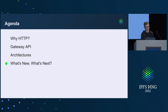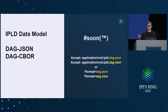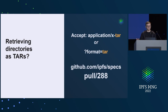That was me speed-running. What's new and what's next: blocks and CARs — trustless retrieval — just landed in Kubo 0.13. People have already started using it, requesting blocks and CARs and doing their own processing. You don't need to use IPLD with this; you could invent your own system. IPLD helps though, so we're considering adding built-in support for IPLD data models so people can request IPLD data in JSON or CBOR formats.